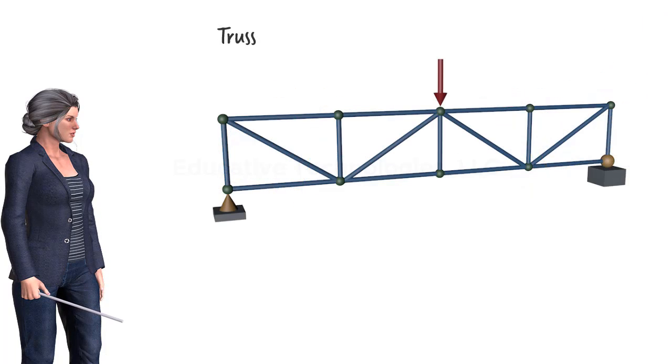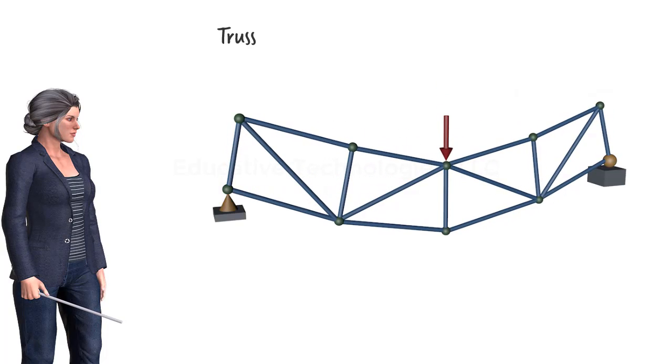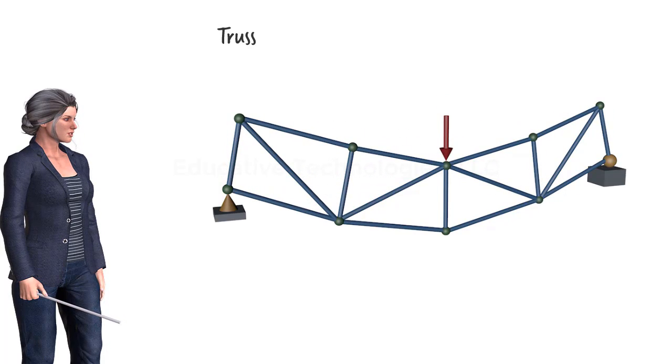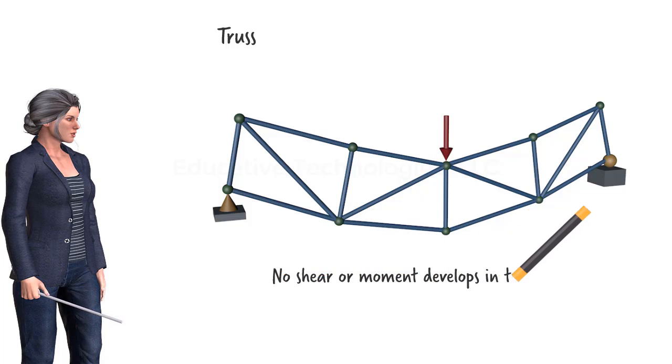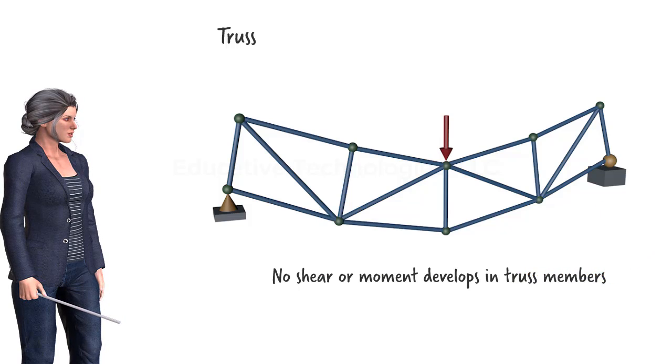A truss, however, responds differently to such a load. Its members displace and their lengths change, but they don't bend the way a beam bends. Therefore in theory, no shear force or bending moment develops in a truss member. The member carries an axial force only.